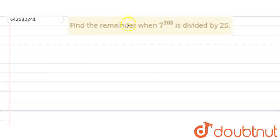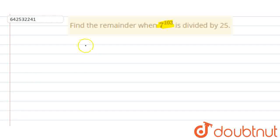So the question we have is: find the remainder when 7 raised to the power of 103 is divided by 25. So what we need to do is, first we will write the question.